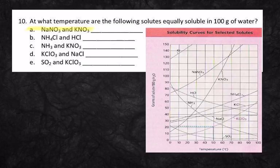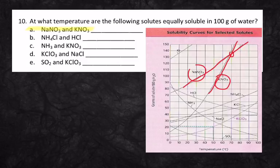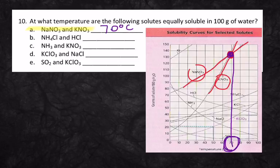Look, this is the easiest one out of all of them. Here's KNO3, and here is the line for NaNO3. And so what you want to do is you want to find where their two lines intersect. The question is asking at what temperature. So we want to find that temperature down here on the x-axis. The answer is going to be 70 degrees Celsius.